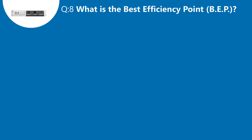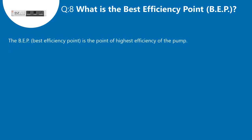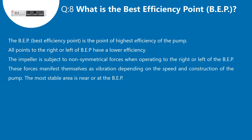Question 8: What is the best efficiency point, BEP? The BEP, or best efficiency point, is the point of highest efficiency of the pump. All points to the right or left of BEP have a lower efficiency. The impeller is subject to non-symmetrical forces when operating to the right or left of the BEP. These forces manifest themselves as vibration depending on the speed and construction of the pump. The most stable area is near or at the BEP.